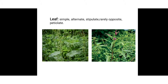Then, the leaves. They are simple or alternate leaves, stipulated, rarely opposite, and petiolate. Simple means the leaf arrangement is single. Alternate means a single leaf arises at each node. Stipules are present, so it is called stipulated. Sometimes they are in opposite arrangement — a pair of leaves arranged oppositely. Petiolate means the petiole is present in the lower portion of the leaf.